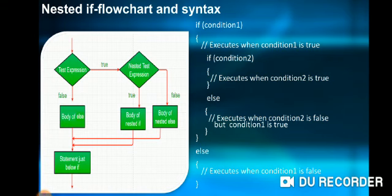If condition one is not fulfilled at all, then the else part of condition one would be executed — the body of the else of test expression one will be executed. In the flowchart, when the test expression is false, the body of the else of test expression one would be executed, and immediately after it, whatever statement follows would be executed. We can also create if blocks without else, and that would work fine too.